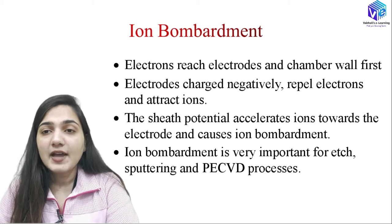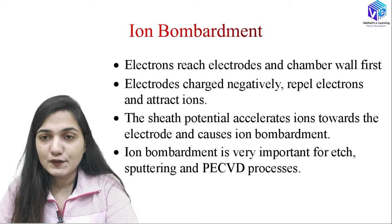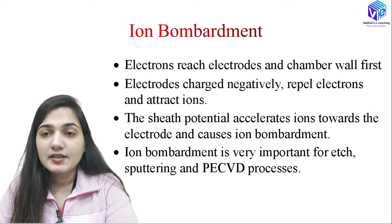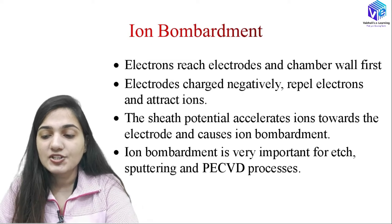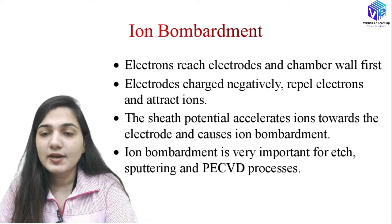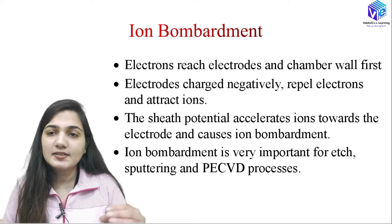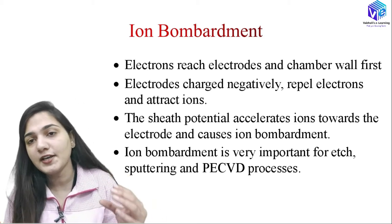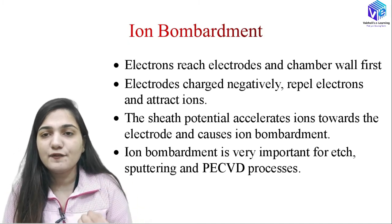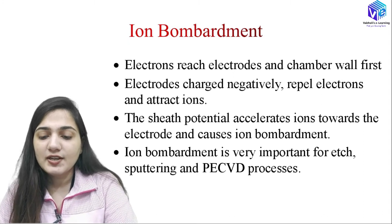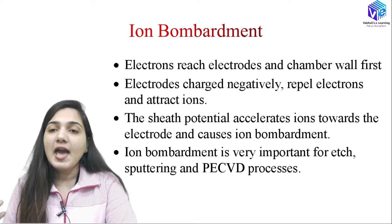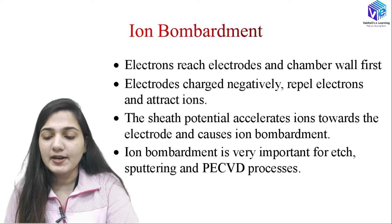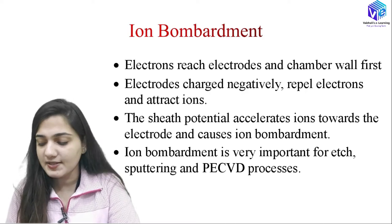As discussed in the previous video, the mass of the electron is very less compared to the mass of ions, so electrons move faster and reach the electrodes and chamber wall first. Electrodes charged negatively will repel electrons but attract ions. Because ions have very high mass, they cannot move easily even with an attractive force, so a sheath potential develops which accelerates the ions toward the electrodes, causing ion bombardment.